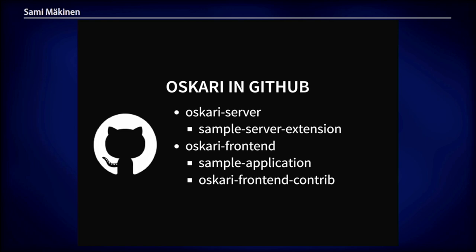We have our code in GitHub. The two main repositories are the OSCARI server and OSCARI frontend, and we have a sample template repository for both of them. The main code resides in those OSCARI server and frontend repos, but for customizing your own OSCARI instance — picking and selecting the features you want included in your application — you can find examples in the sample repositories.